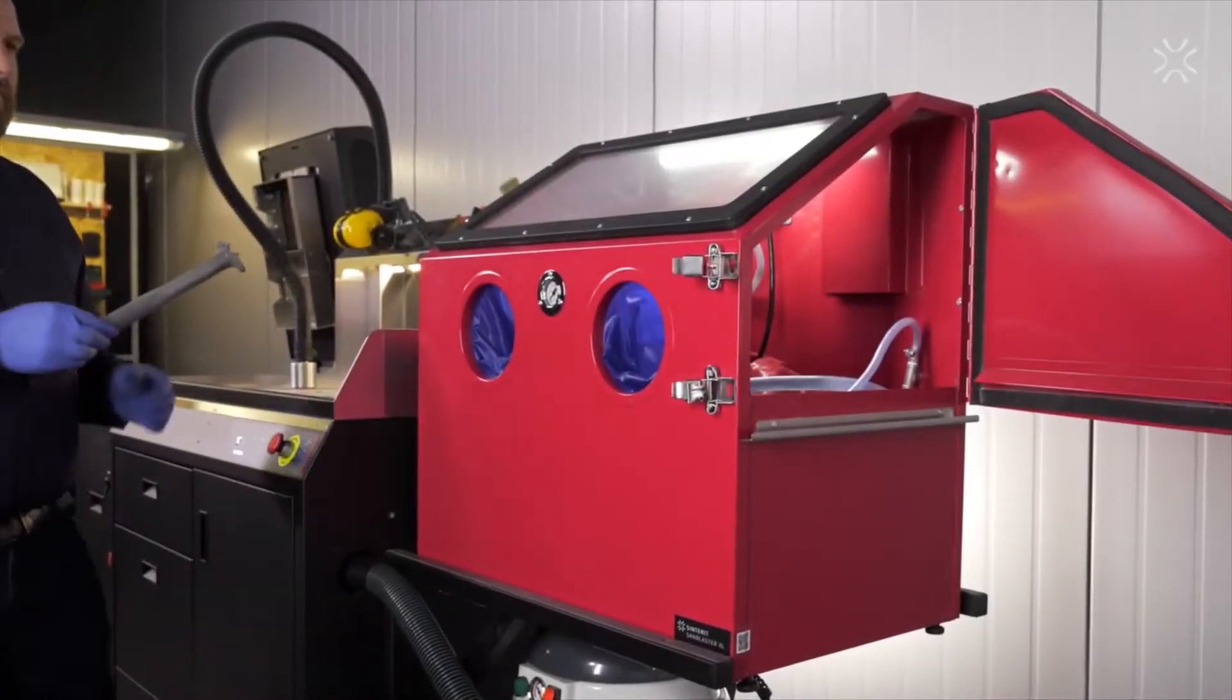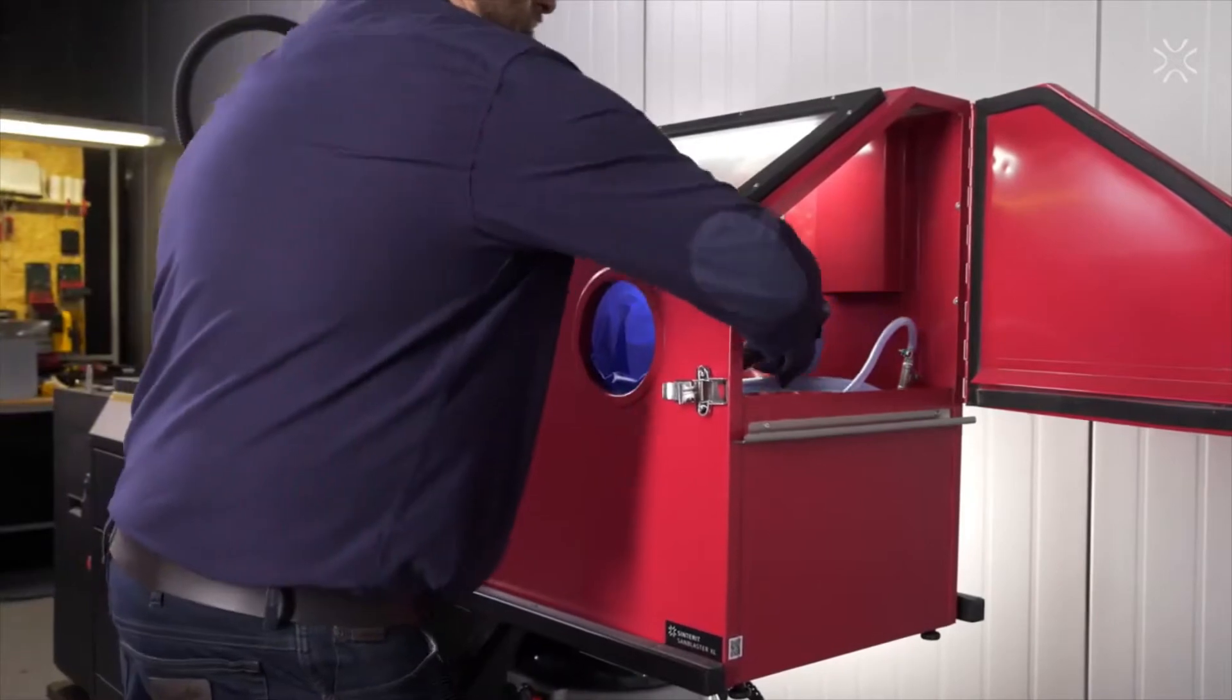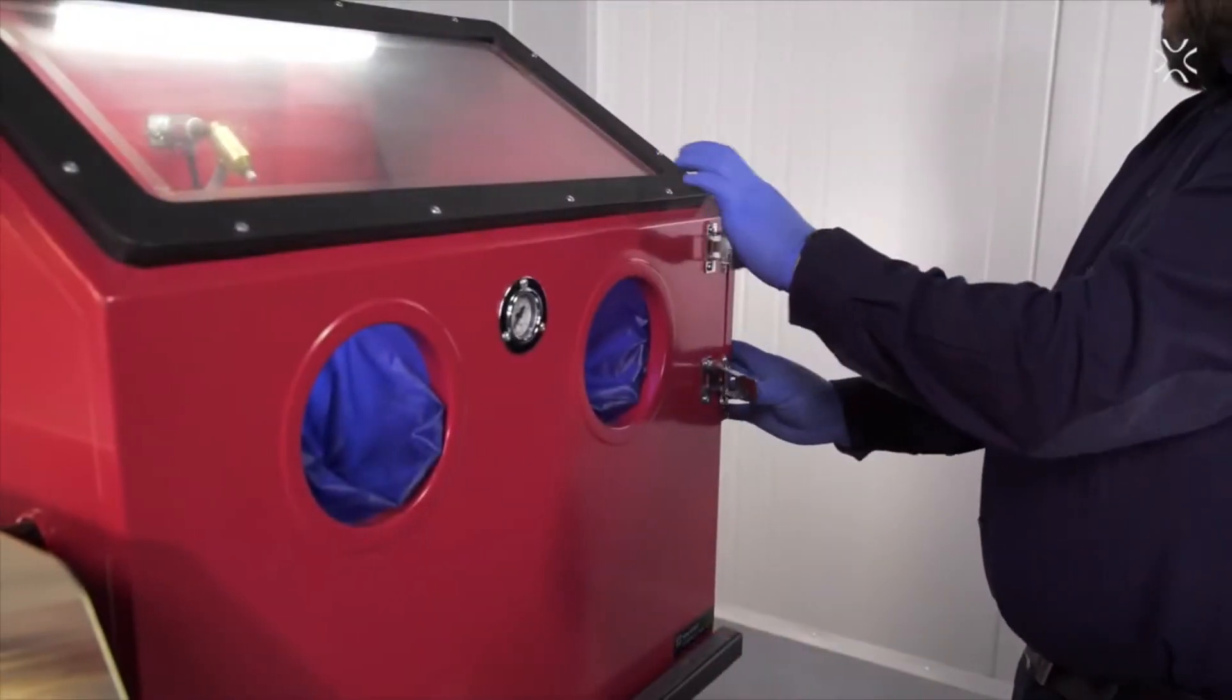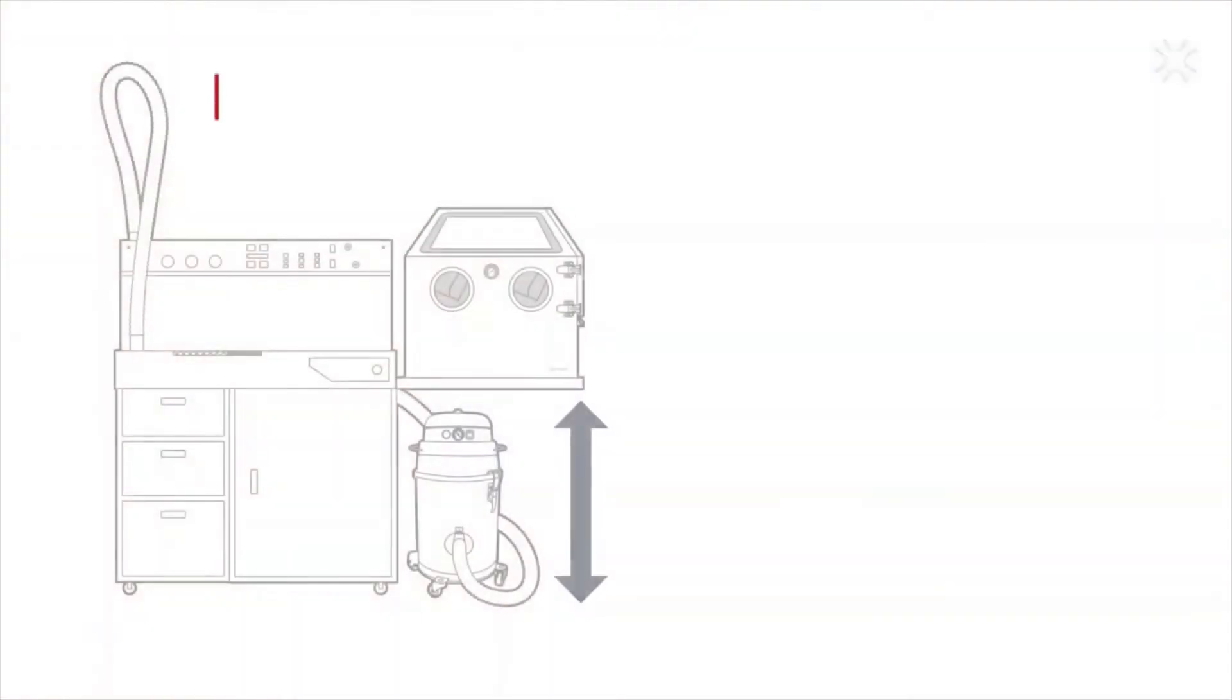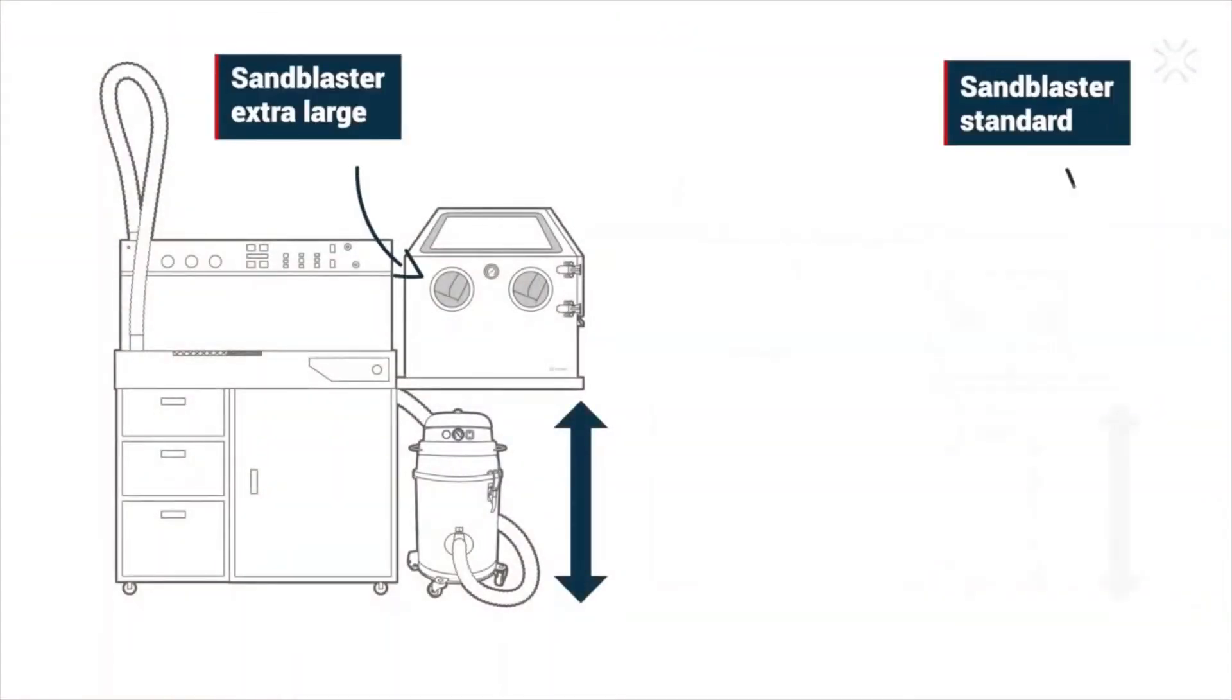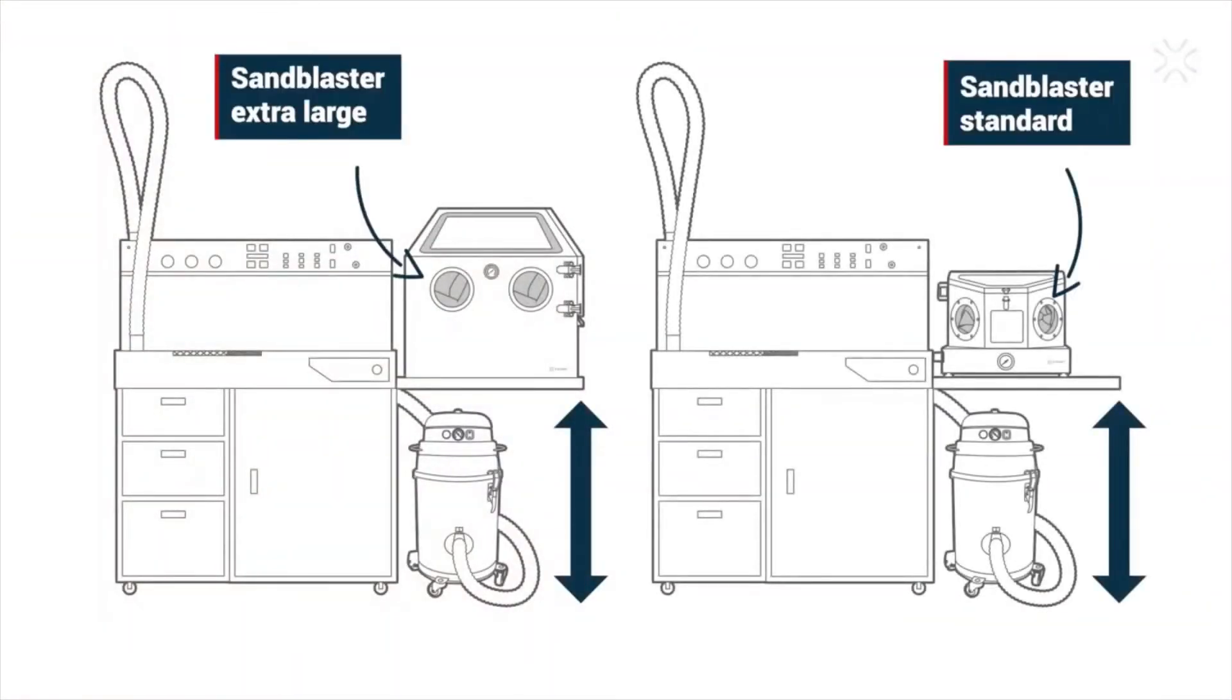To polish your diamond, that is, to blast your printout, simply use the sandblaster located on the right side of the PHS. We recommend the extra large model, but the PHS is also compatible with the standard sandblaster.